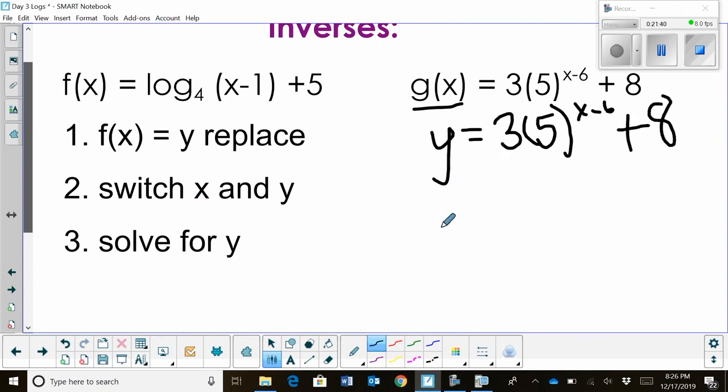Second step, switch x and y. So x replaces y, and then in the exponent, I'm going to put y minus six. So that part's pretty easy. Replace f of x or g of x in this case, and then switch x and y. Now we have to solve for y. This one gets a little trickier.